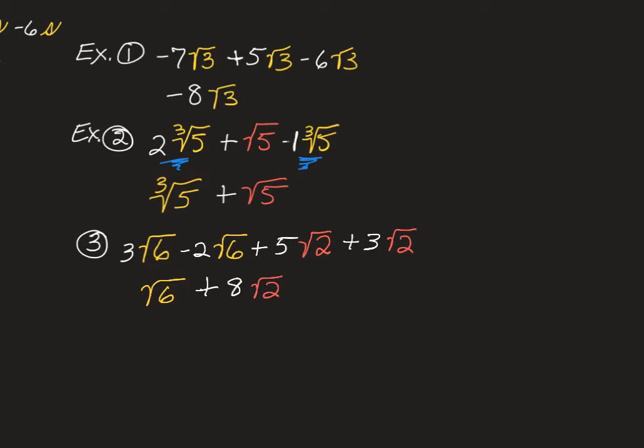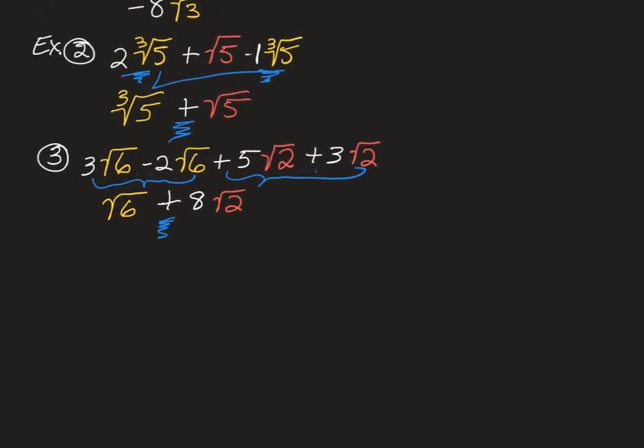We cannot combine those in any way because there are additions or subtractions separating the terms. And especially in our final answers, once we add up all the like terms that we can, if you have an addition or a subtraction separating unlike terms, you are finished.